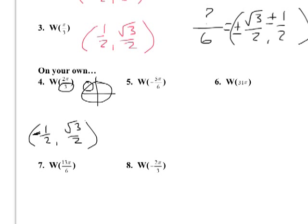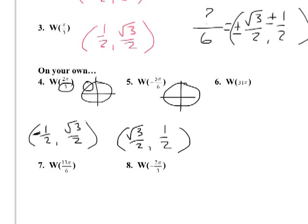Next, W(-5π/6). The denominator is 6, so the coordinates involve √3/2 and 1/2. Since it's negative, we go clockwise. Traveling 5/6 of the way to π in the clockwise direction puts us in the third quadrant. In the third quadrant, both coordinates are negative, so the answer is (-√3/2, -1/2).